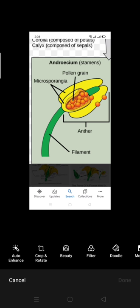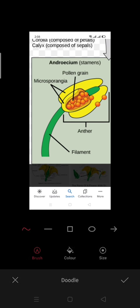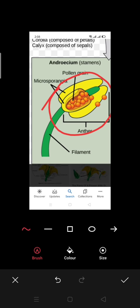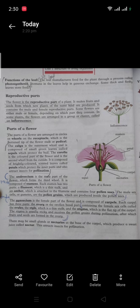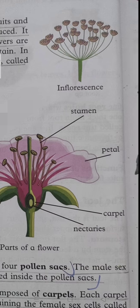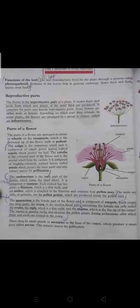This is the stamen. This is the filament. The anther contains four pollen sacs. Pollen sacs contain pollen. The male sex cells or gametes are the pollen grains, which are produced inside the pollen sacs.